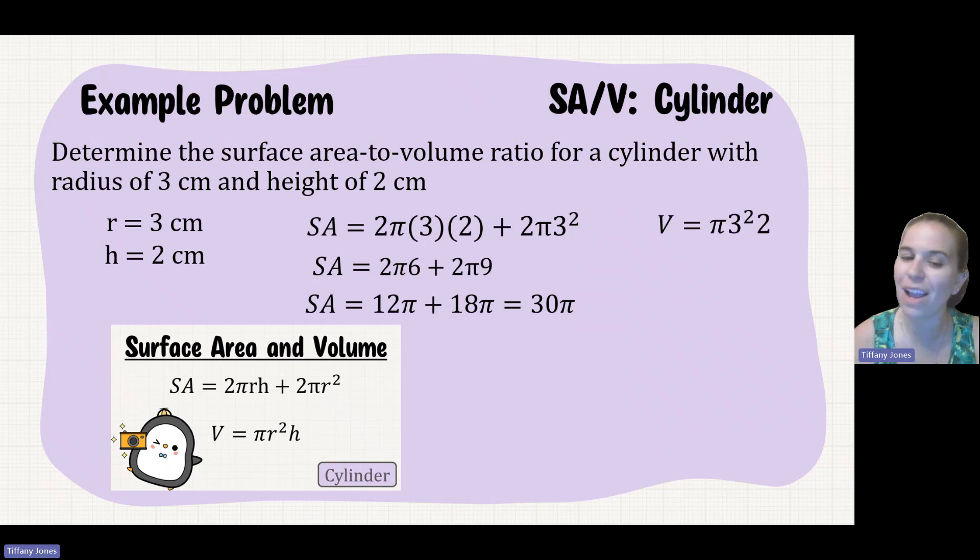The volume is going to be πr being 3 squared times my height of 2. So 3 squared is 9, 9 times 2 is 18. So then we do our surface area to volume ratio, and we'll get 30π over 18π, which reduces down to 5 over 3.